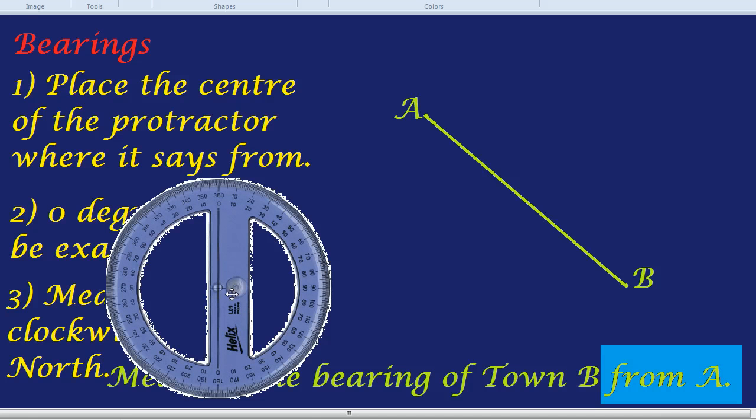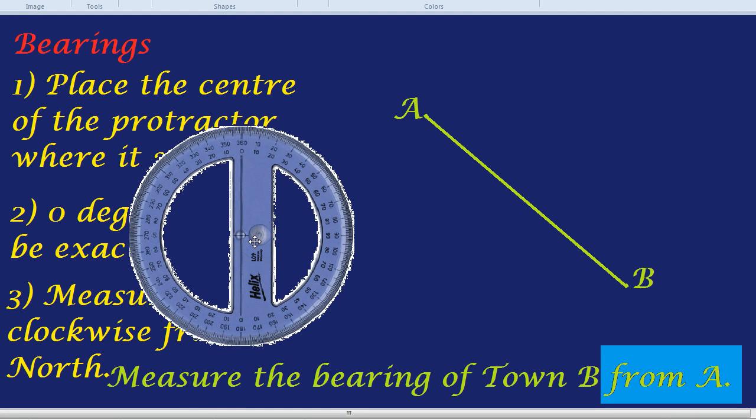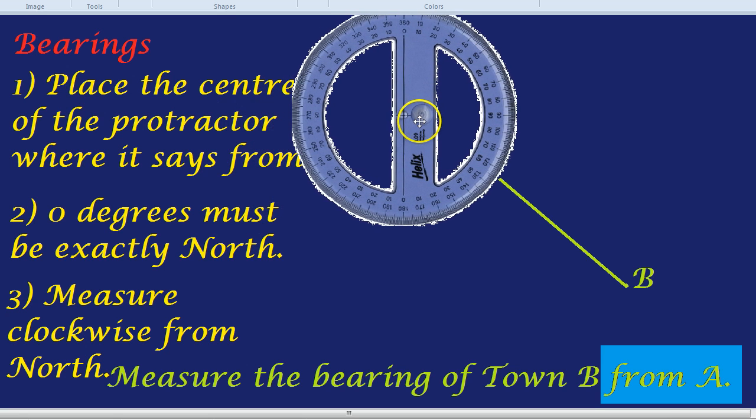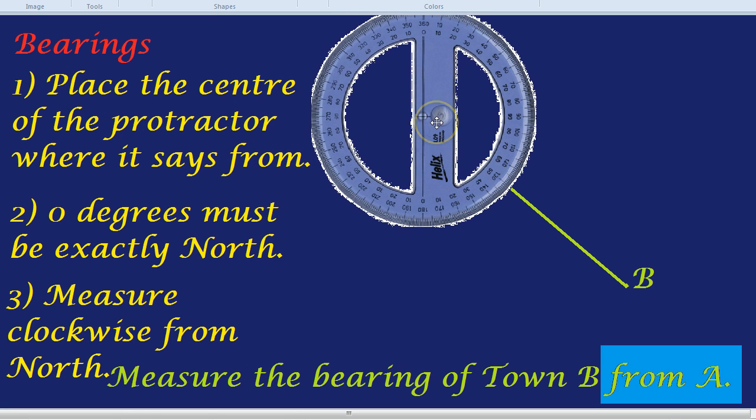Now it said place the center of the protractor exactly where it says from, and it says from A. I'm going to use my finger and place it on the screen, which obviously you're not going to see. And that just means that when I place the center of the protractor there, I know it's exactly at A. In real life, a protractor is transparent, so you can just place the center exactly. But I'm going to move it so the center of the protractor is exactly at A. There it is.